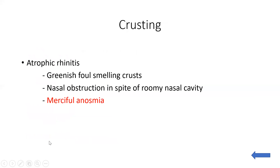The most common cause of crust formation in the nose is atrophic rhinitis, in which greenish, foul-smelling, extensive crusting is present. There is atrophy of the nasal mucosa and bones, giving a roomy nasal cavity, yet the patient still has nasal obstruction because the crusts fill the cavity. A notable term here is merciful anosmia — the patient has foul-smelling discharge but is unaware of it because they are anosmic due to crusting and neural involvement, which is merciful for the patient but irritating to those nearby.